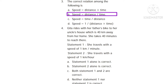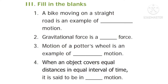Question number four: Geeta travels with her father on a bike to her uncle's house, which is 40 kilometers away from her home. She takes 40 minutes to reach there. Statement one: she travels at a speed of one kilometer per minute. Statement two: she travels at a speed of one kilometer per hour. The correct answer is option A — statement one alone is correct.